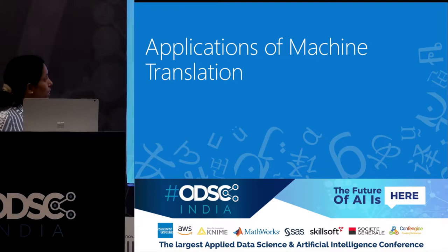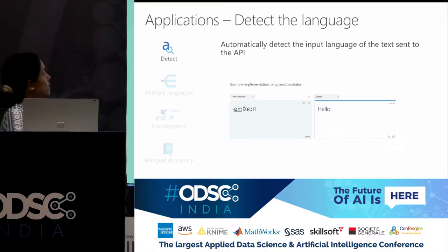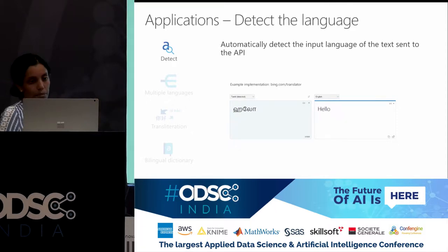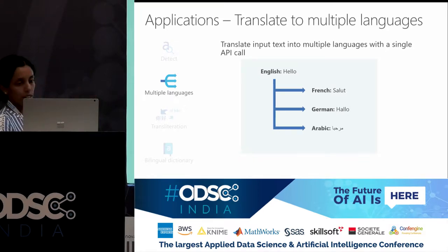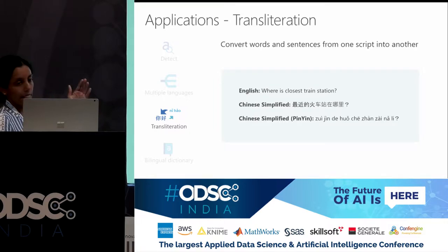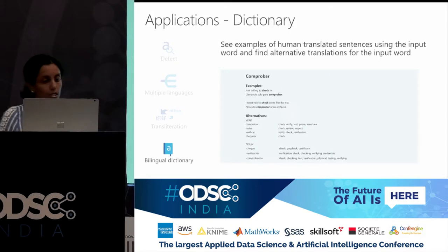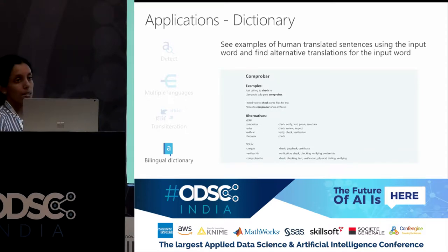In addition to the Bing Translate example, I'd just like to outline a few more examples. There are APIs that are readily available, so we don't have to reinvent the wheel. We have APIs that automatically detect the input language and translate it to one language, or translate a word or sentence from one language to multiple languages. You can also do transliteration — where you have text in, say, English, and you want to convert it into Chinese but don't know how to speak Chinese, so it provides the transliterated script. You can also use it as a bilingual dictionary with human-translated sentences and synonyms.